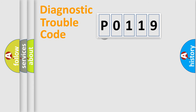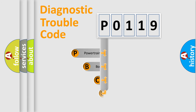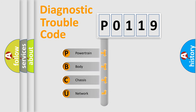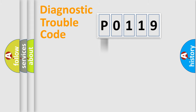First, let's look at the history of diagnostic fault code composition according to the OBD2 protocol, which is unified for all automakers since 2000. We divide the electric system of the automobile into four basic units: Powertrain, Body, Chassis, and Network. This distribution is defined in the first character of the code.